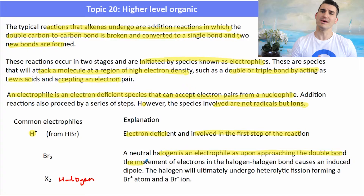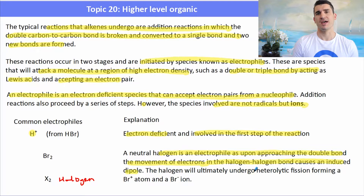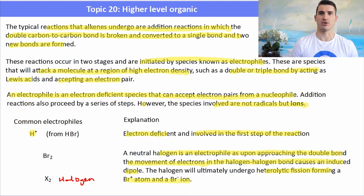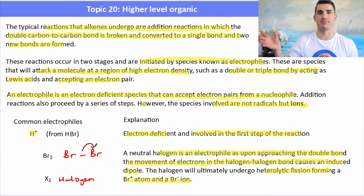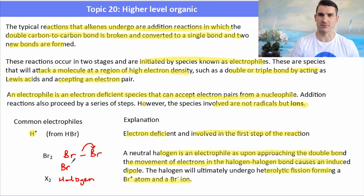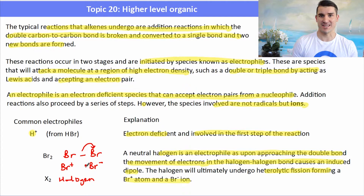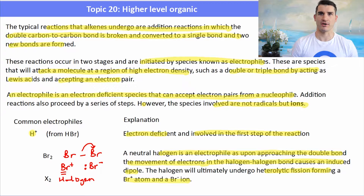Now a halogen — as it approaches the carbon-to-carbon double bond, heterolytic fission occurs, forming a positively charged ion and a negatively charged ion. One of the atoms in the halogen will take the electrons so it becomes negatively charged, and the other one will become positively charged. It's the positively charged ion that acts as the electrophile — not the Br₂, the positively charged ion.